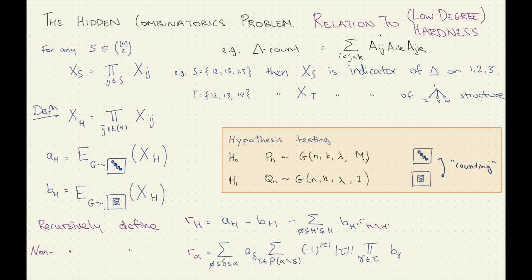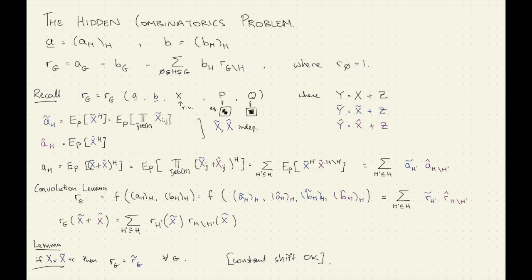One more property we use — this gets back to the question about how we get the corollary for the binary case. It's not just thresholding, but what we can say is that what we care about is the planted structure. If we can shift the planted signal by some constant, then these r's don't actually change, and that helps us work it out.